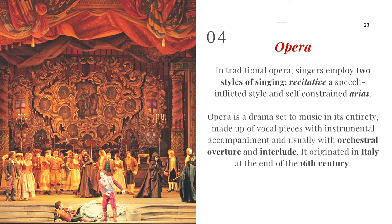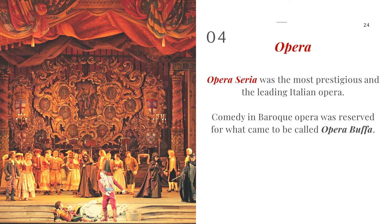Opera is a drama set to music in its entirety, made up of vocal pieces with instrumental accompaniment and usually with an orchestral overture and interlude — the overture being the introduction and the interlude being the music in the middle. It originated in Italy at the end of the 16th century. The most common types are opera seria — the most prestigious, serious Italian opera about ancient Greek and Roman heroes — and opera buffa, which is a comic opera intended to entertain and make audiences laugh.